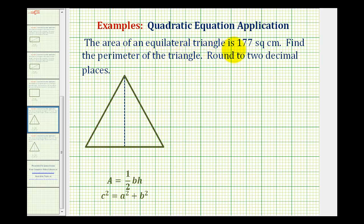The area of an equilateral triangle is 177 square centimeters. An equilateral triangle has three sides of the same length and three angles of the same measure. Given this information, we want to find the perimeter of the triangle and round to two decimal places as needed.